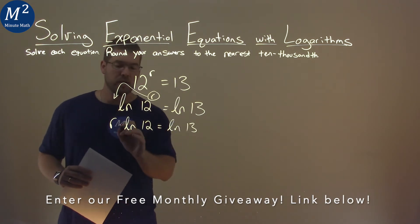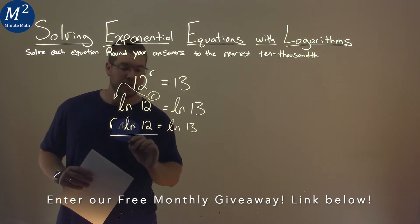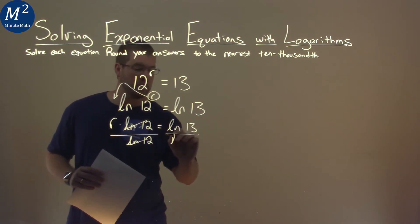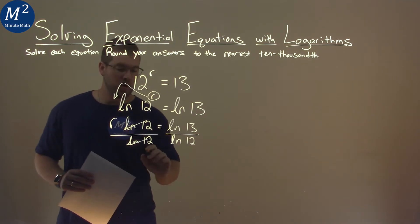Continuing on, we have multiplication here. Divide both sides by natural log of 12 to eliminate it on the left and bring it to the right-hand side. r is now by itself.